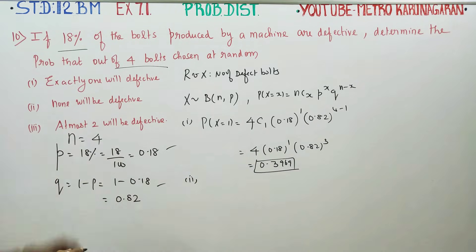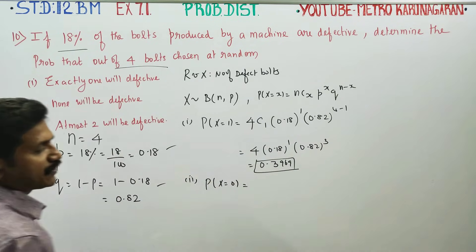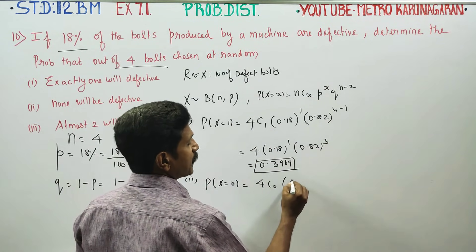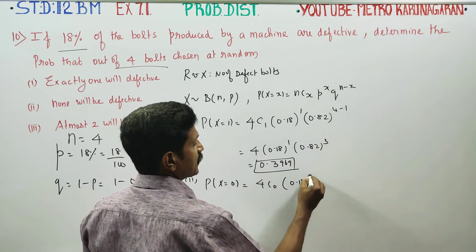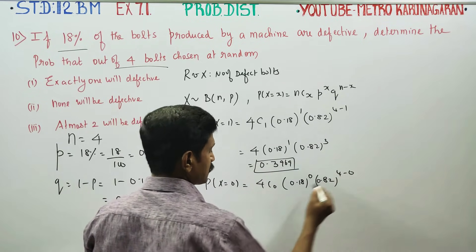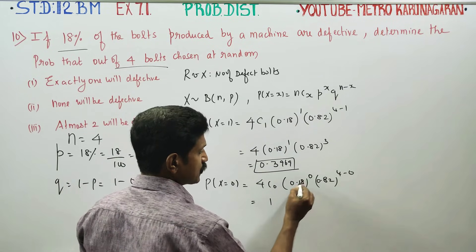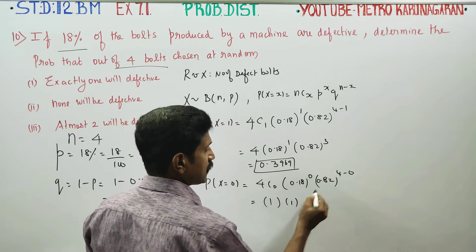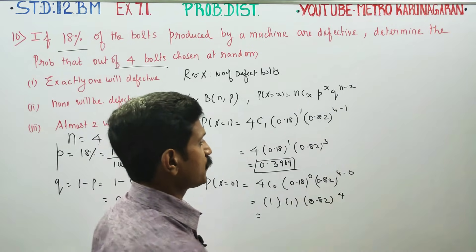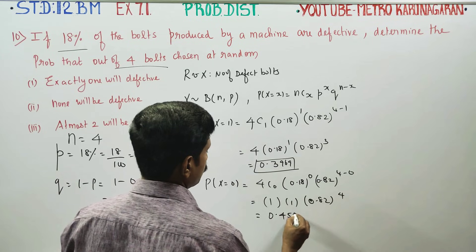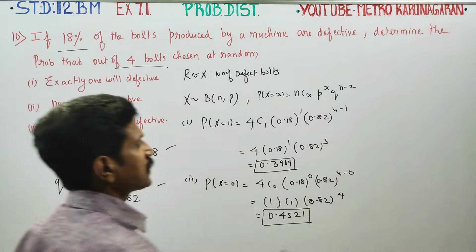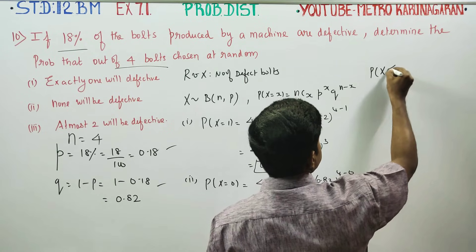Second problem: none will be defective. P(X = 0) = 4C0 · (0.18)^0 · (0.82)^(4−0). 4C0 becomes 1, (0.18)^0 is 1, and this gives (0.82)^4. Calculating 0.82 × 0.82 × 0.82 × 0.82 gives the result for P(X = 0) = 0.4521.